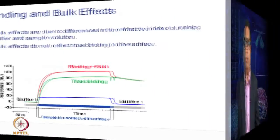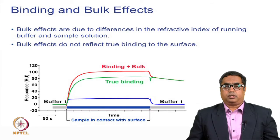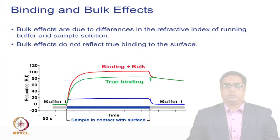Another important parameter is bulk — the difference in refractive index between the running buffer and the sample solution. This is where many assays go wrong and fail to yield proper kinetic data. It is recommended to equilibrate analytes to the running buffer to obtain good kinetic data.